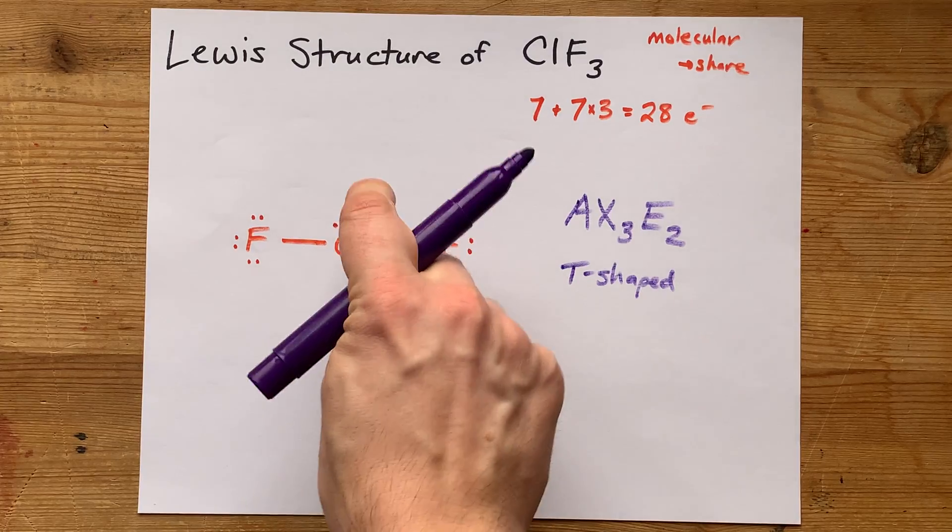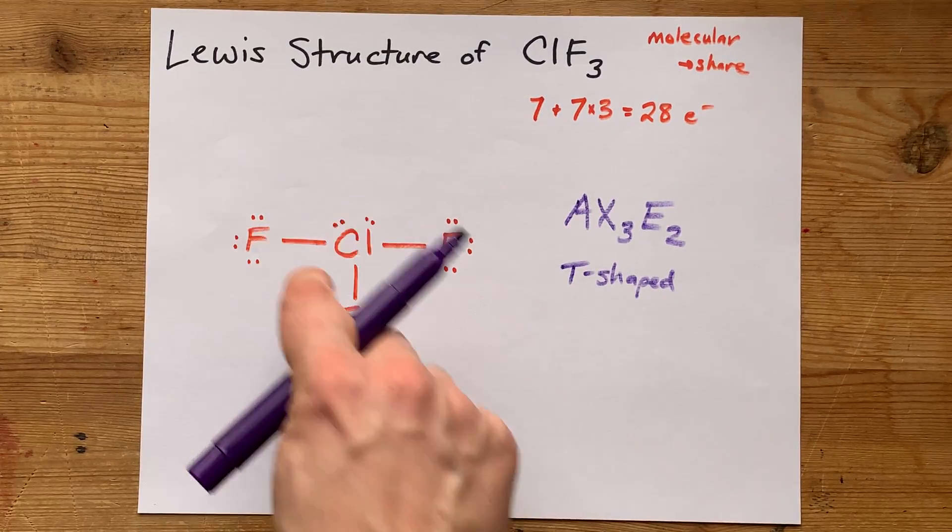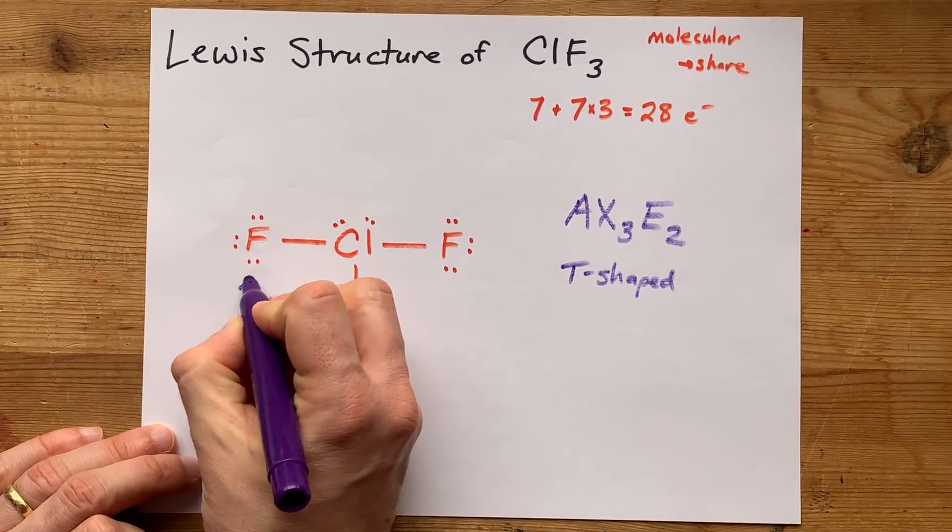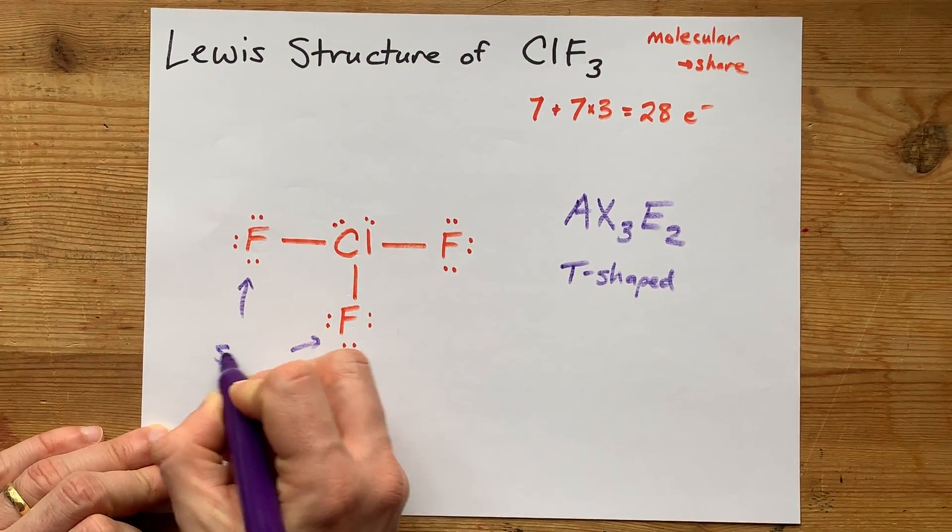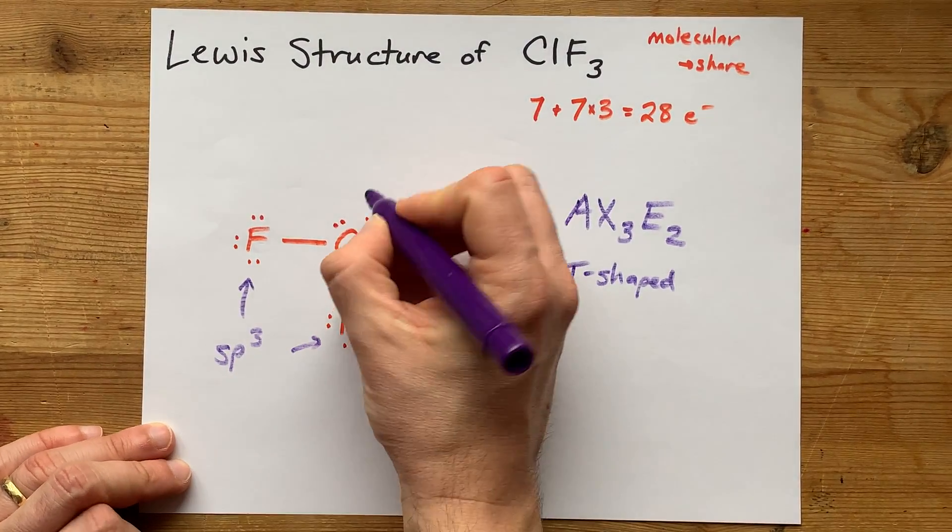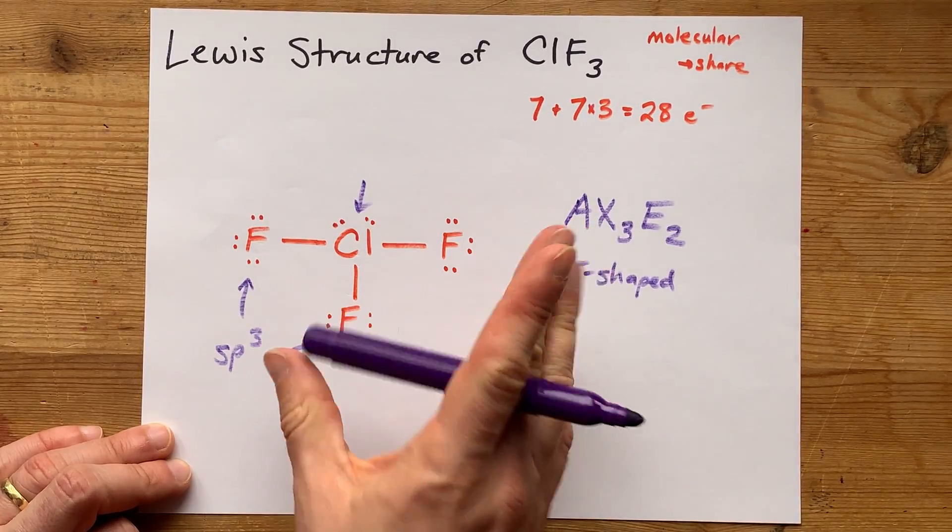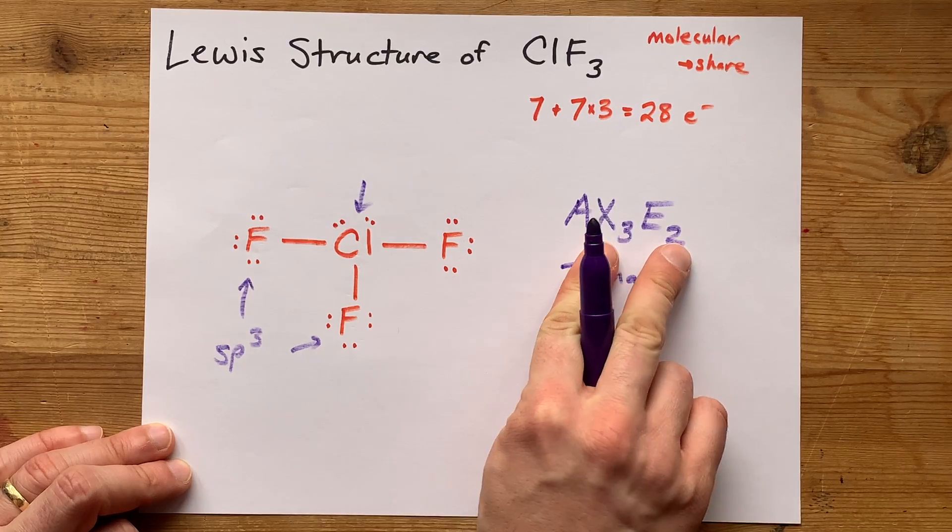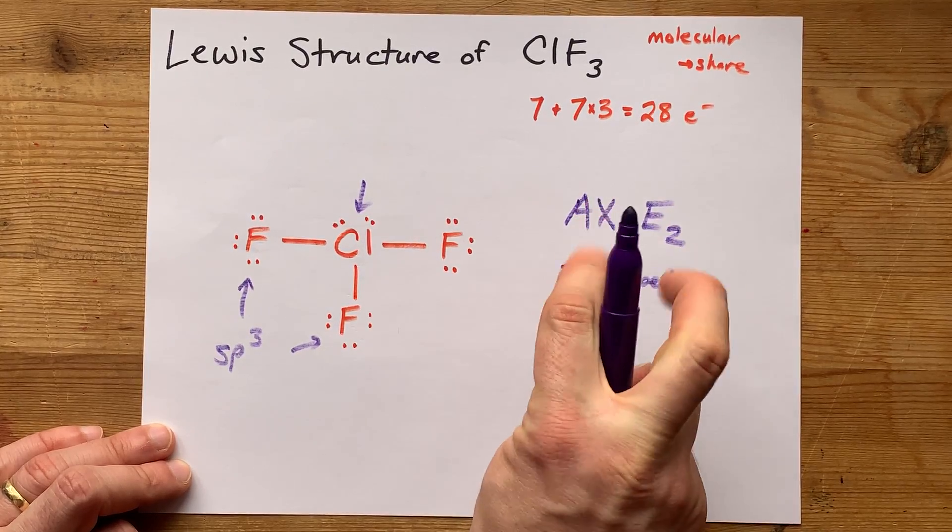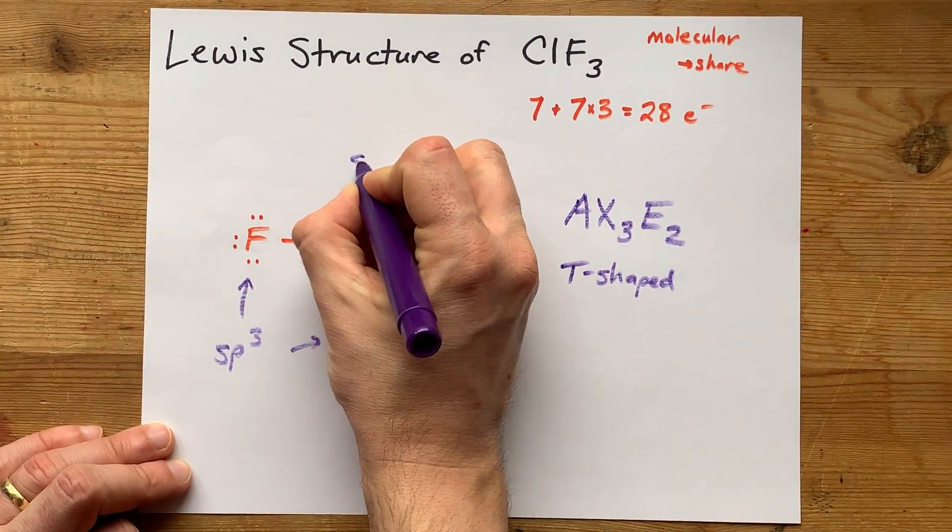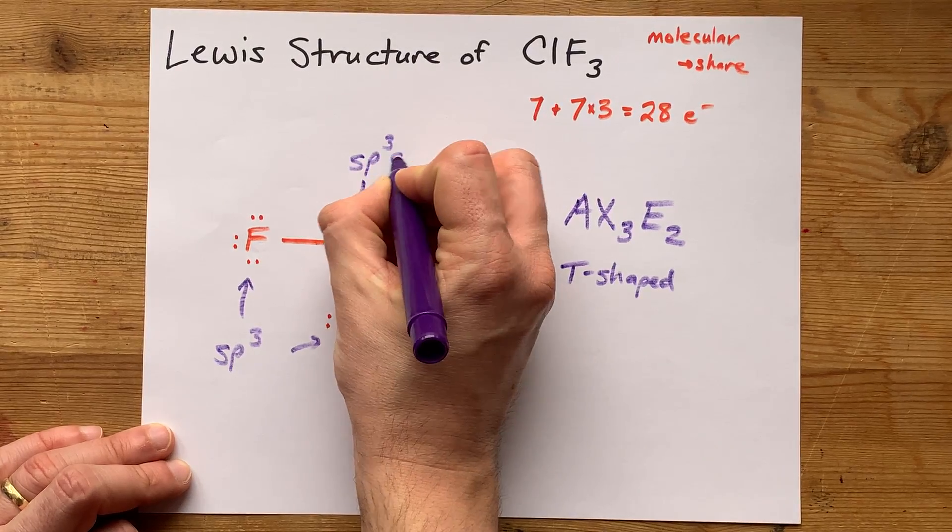And the hybridization of the fluorines are all sp3, while the hybridization of the chlorine with the expanded octet, which again requires five things surrounding it, is sp3d.